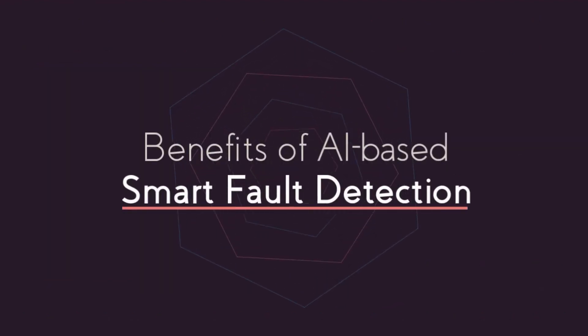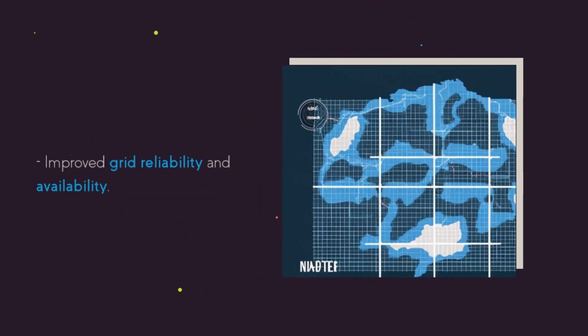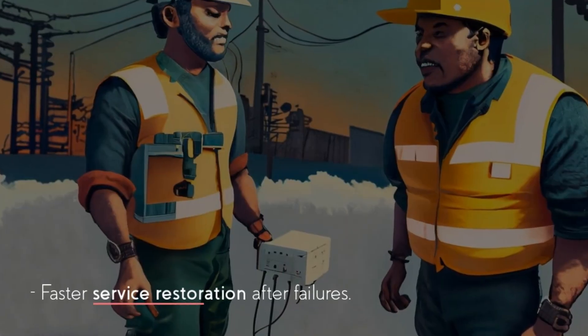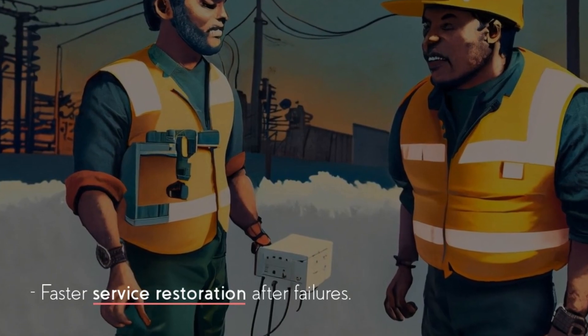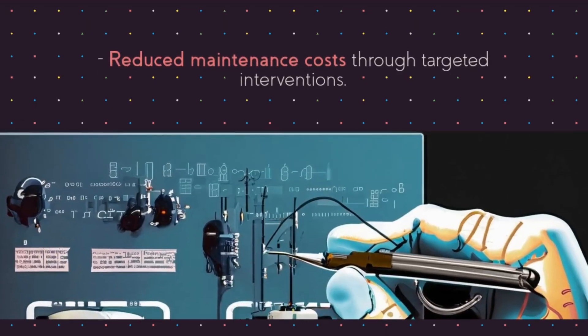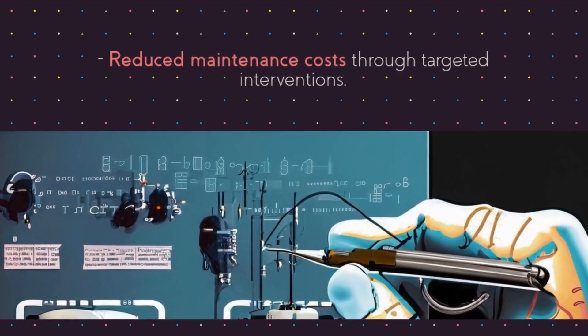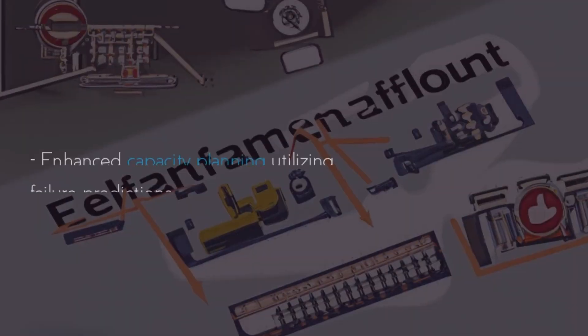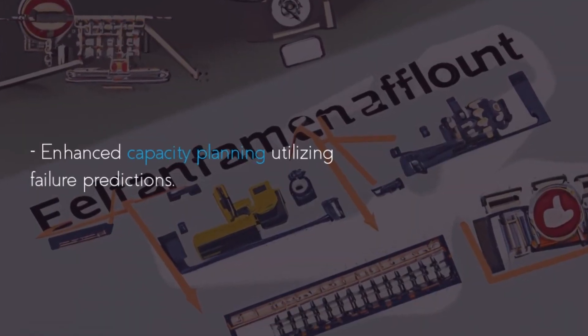Using AI fault detection makes the grid more reliable with less downtime. When outages do occur, service can be restored faster. Maintenance is cheaper because it targets where it's really needed. Knowing when failures are likely helps plan capacity.